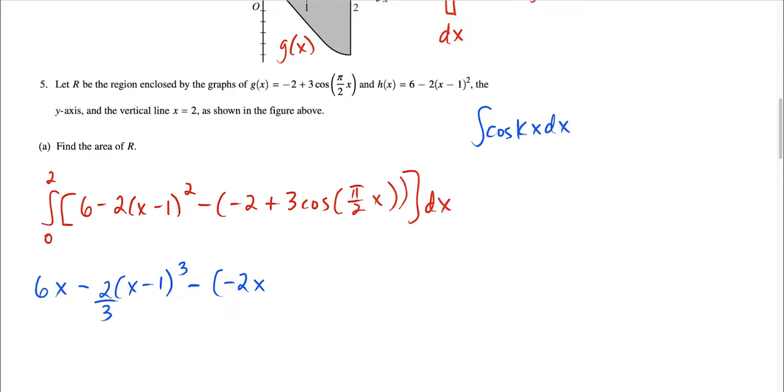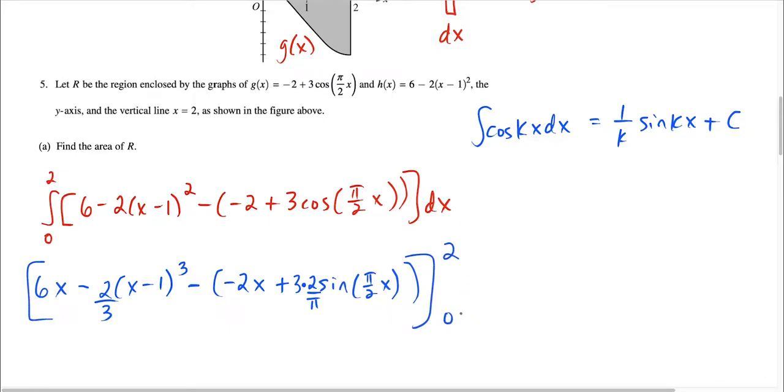But anytime your u-term gives you a derivative of one, notice the derivative of x minus one is one, that means you could skip the u-sub and just treat this as its own variable. So I would have x minus one to the third power divided by three, but I have a coefficient of two, so when I divide by three, that's just going to give me minus two thirds in front. I can leave this. The antiderivative of negative two gives us negative two x. And then the antiderivative of the last piece. This one, it helps to have this little formula here. We could once again do a u-sub, but anytime my u-term is linear, like pi over two times x, that's just a linear factor.